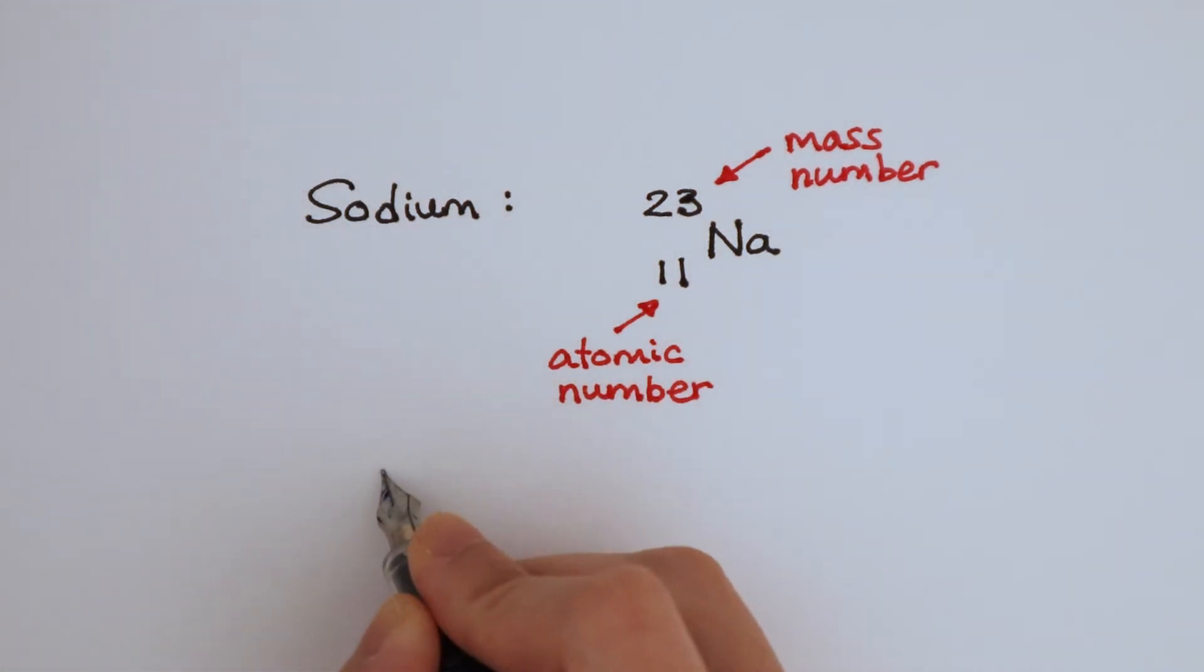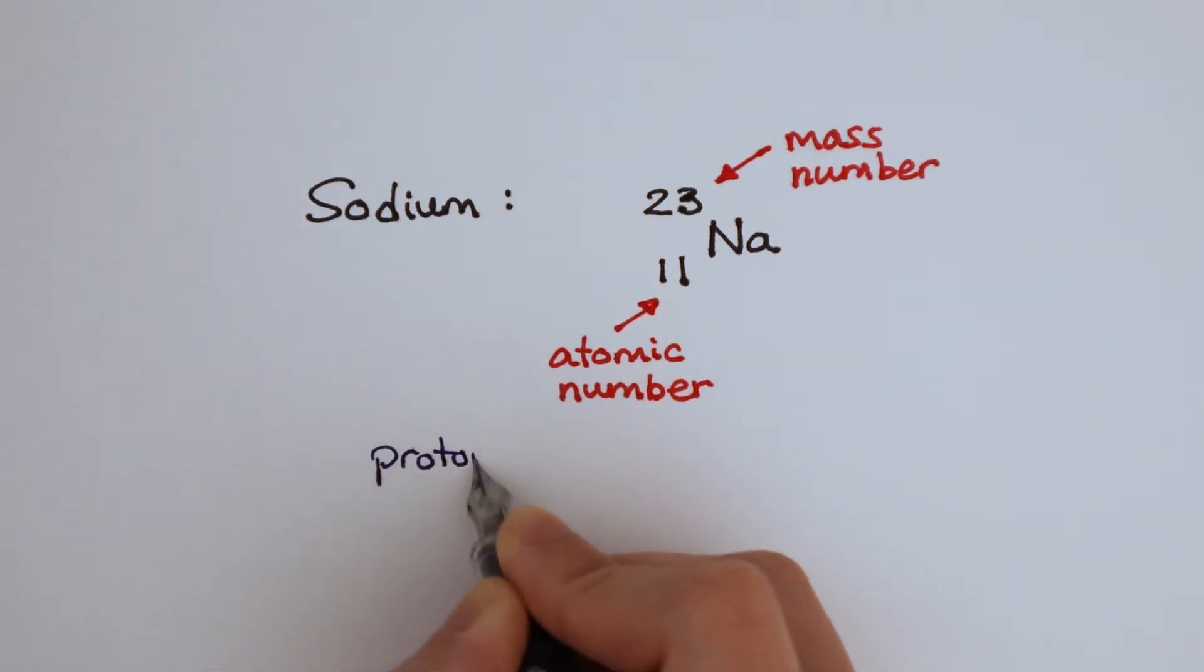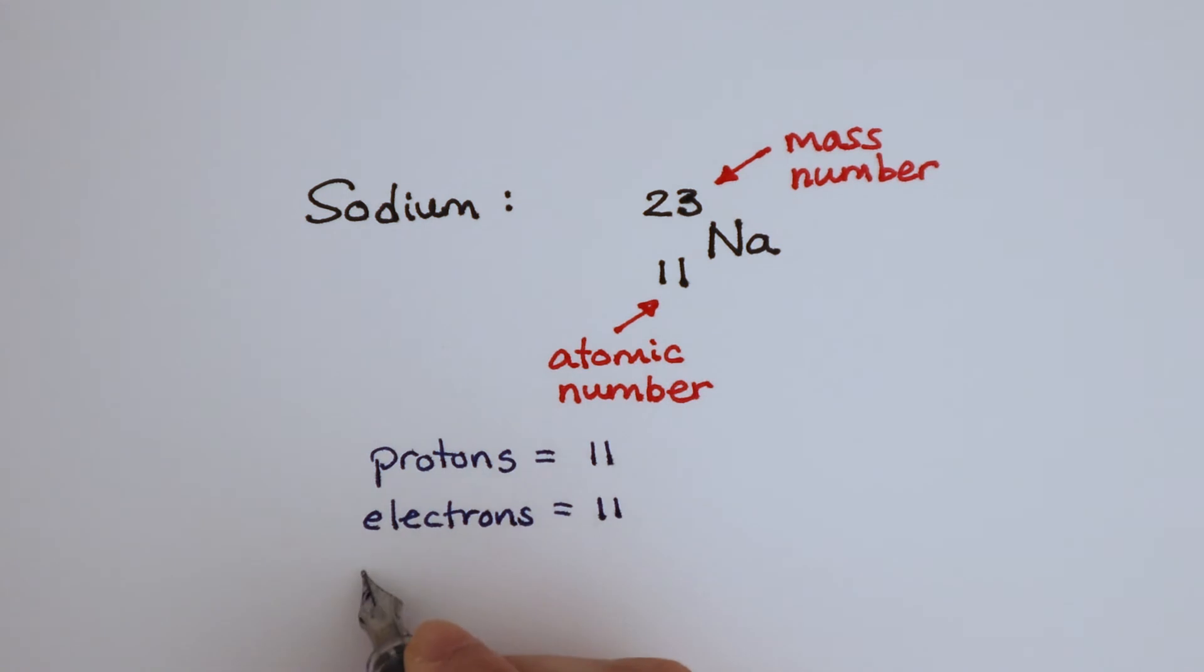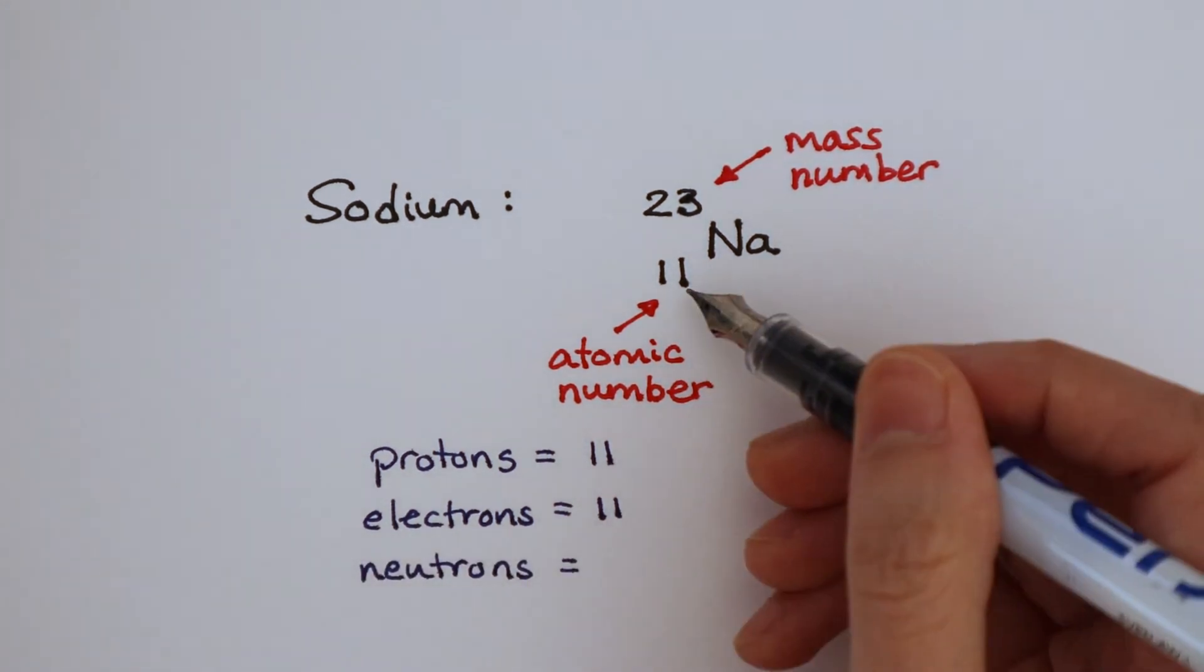The atomic number tells us that a sodium atom has 11 protons. It also has 11 electrons to balance the charge. To find out the number of neutrons that it has, we need to subtract 11 from 23. This means that a sodium atom has 12 neutrons.